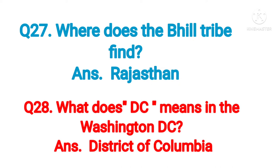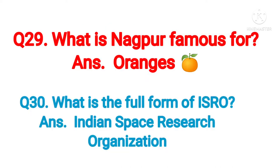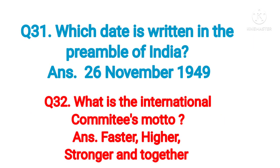Question number twenty-seven: where does the Bheel tribe live? Answer: Rajasthan. Question number twenty-eight: what does DC mean in Washington DC? Answer: District of Columbia. Question number twenty-nine: what is Nagpur famous for? Answer: Oranges.